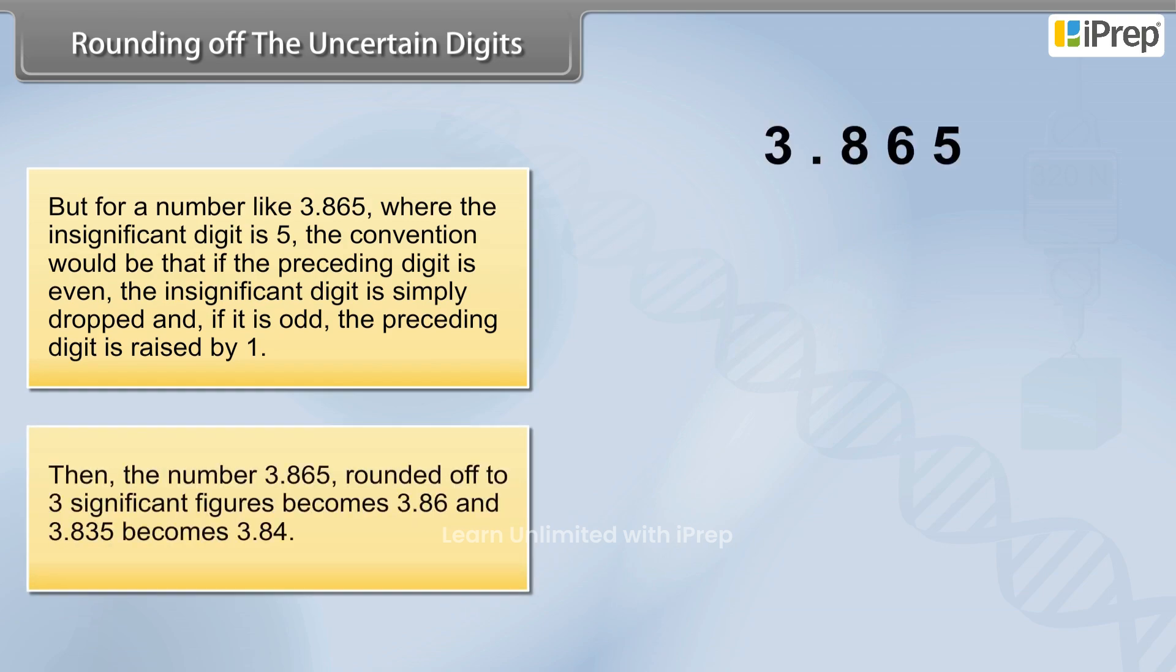Then the number 3.865 rounded off to three significant figures becomes 3.86 and 3.835 becomes 3.84.